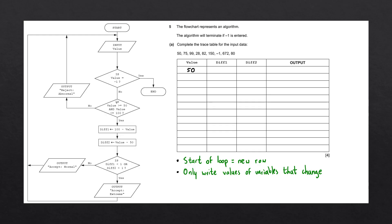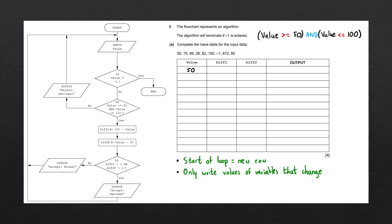This decision asks: is the value greater than or equal to 50, AND is the value less than or equal to 100? We have the boolean operator AND in the middle. A boolean operator can only be evaluated with two boolean values on the left and right. We must evaluate each side first — we can draw brackets around them. Starting off, value is greater than or equal to 50: since the value is 50, this evaluates to true.